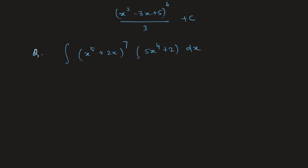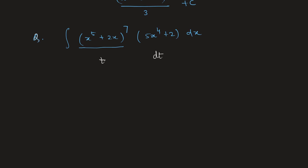This is a complicated function and we have no product rule in integration yet. One method would be expanding using binomial theorem, getting 8 terms, multiplying by (5x⁴ + 2), resulting in 16 terms to individually integrate. However, if we observe that (x⁵ + 2x) is our t, then its derivative 5x⁴ + 2 is right there.